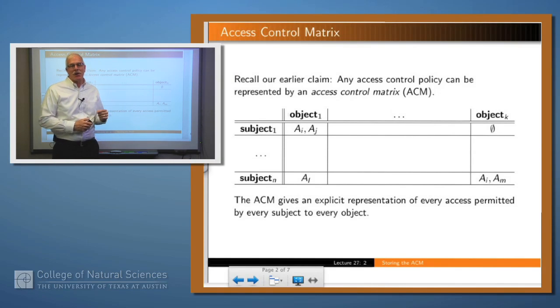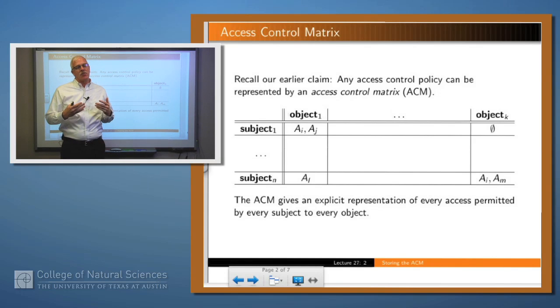You remember in an earlier lecture we talked about this. If you have any access control policy, it's a way of characterizing which subjects have access to which objects in which modes. You can represent that in the most general form as an access control matrix, which is just a big matrix that lists all these things. You have the subjects and the objects, and for each intersection you say which accesses that subject is allowed to that object.